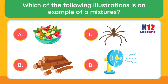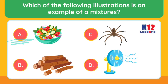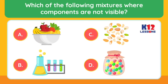Mixtures can be solid, liquid, or gas. They can be homogeneous or heterogeneous and are made up of two or more components. Which of the following mixtures have components that are not visible?